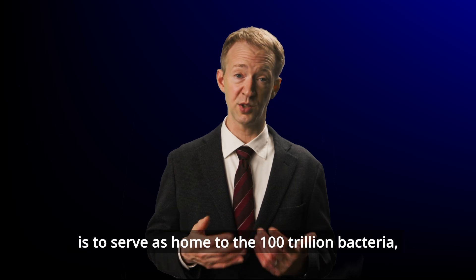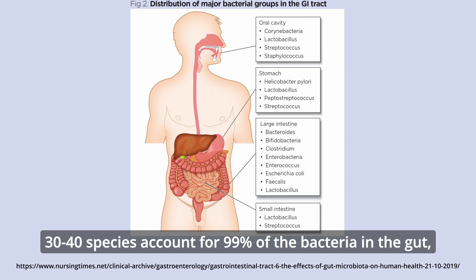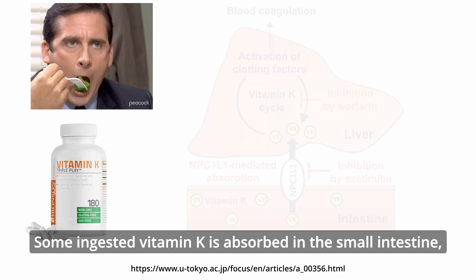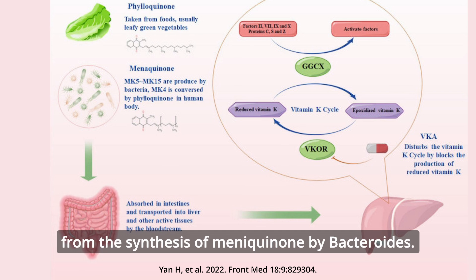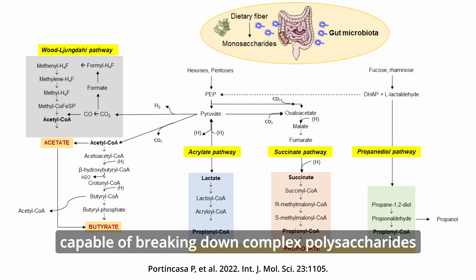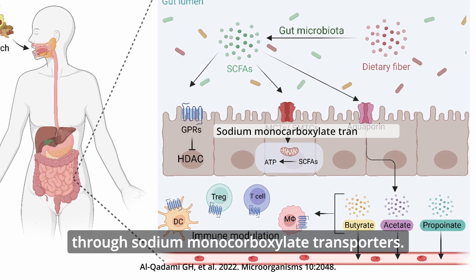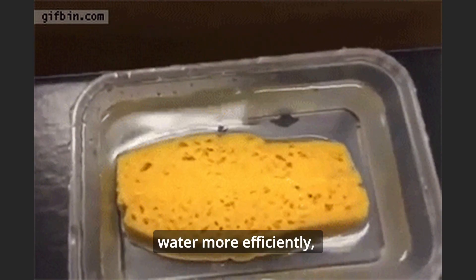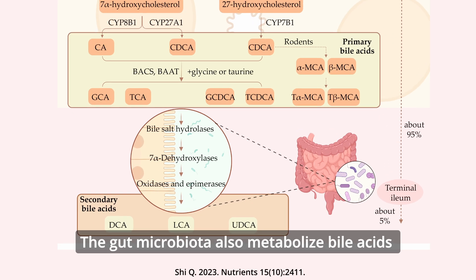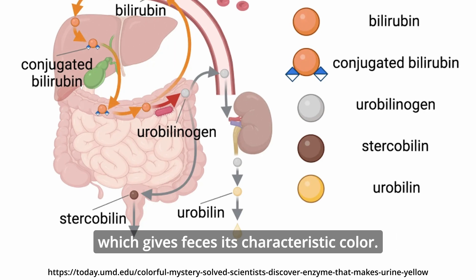Another essential function of the large intestine is to serve as home to the 100 trillion bacteria, archaea, fungi, and viruses that constitute the human microbiome. Thirty to forty species account for 99% of the bacteria in the gut, especially Clostridium perfringens, Bacteroides fragilis, and Enterobacter aerogenes. Some ingested vitamin K is absorbed in the small intestine, but most is derived from the synthesis of menaquinone by Bacteroides. Gut bacteria possess enzymes capable of breaking down complex polysaccharides into short-chain fatty acids such as acetate, propionate, and butyrate. Colonocytes import these fatty acids through sodium monocarboxylate transporters, which not only helps the colon absorb water more efficiently but also provides an additional source of energy, allowing us to metabolize up to about 10% of this undigestible material. The gut microbiota also metabolize bile acids into secondary bile acids such as deoxycholic acid and lithocholic acid, and they reduce urobilinogen to stercobilin, which gives feces its characteristic color.